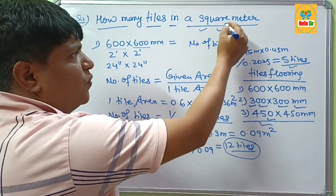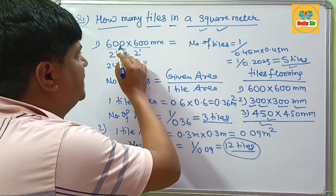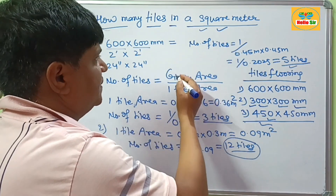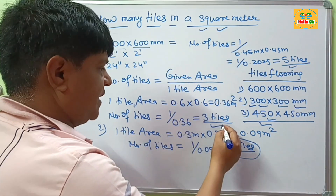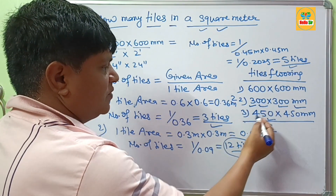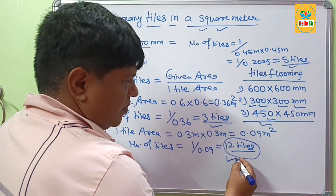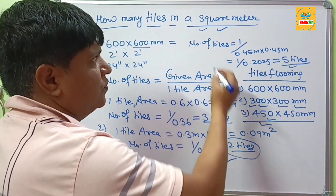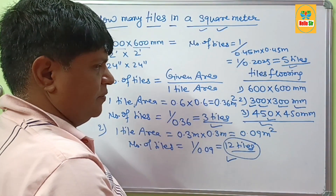In summary: if you are using 600 mm tiles, you will need about 3 tiles per square meter. If you are using 300 mm tiles, you will need approximately 12 tiles per square meter. And if you are using 450 mm tiles, you will need about 5 tiles per square meter.